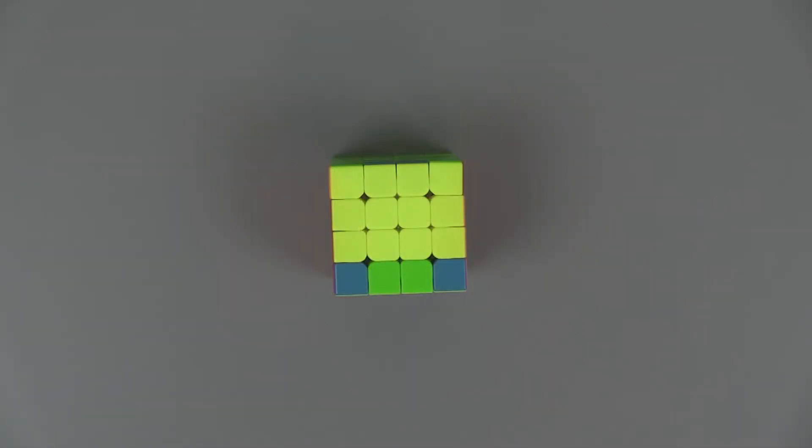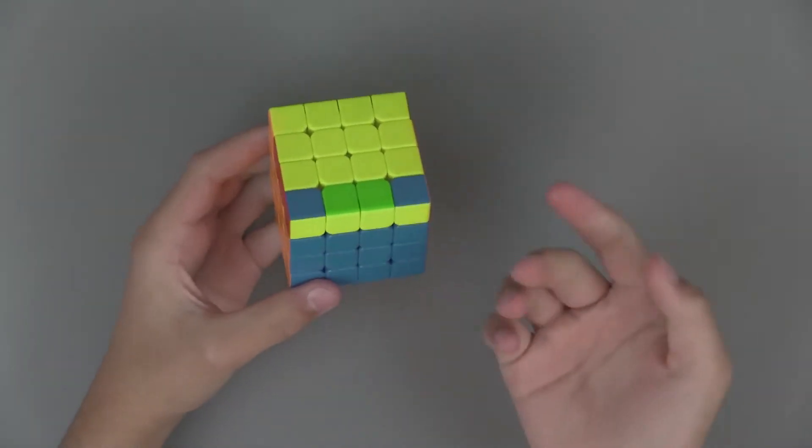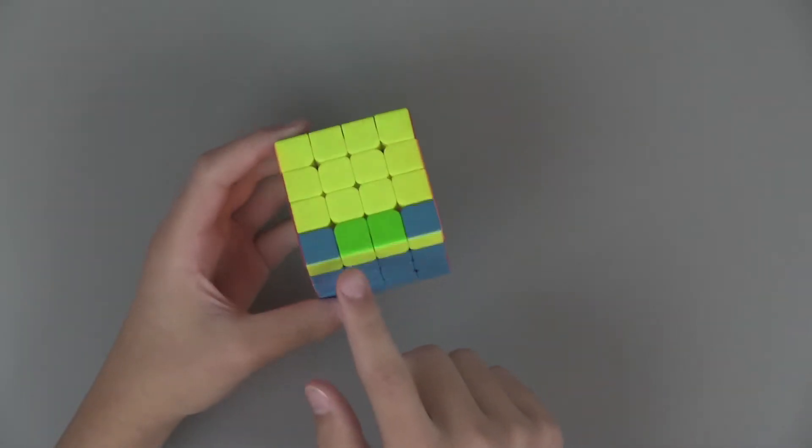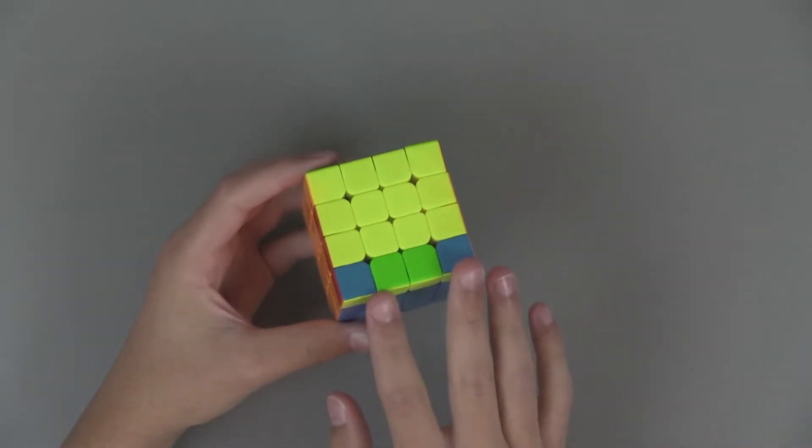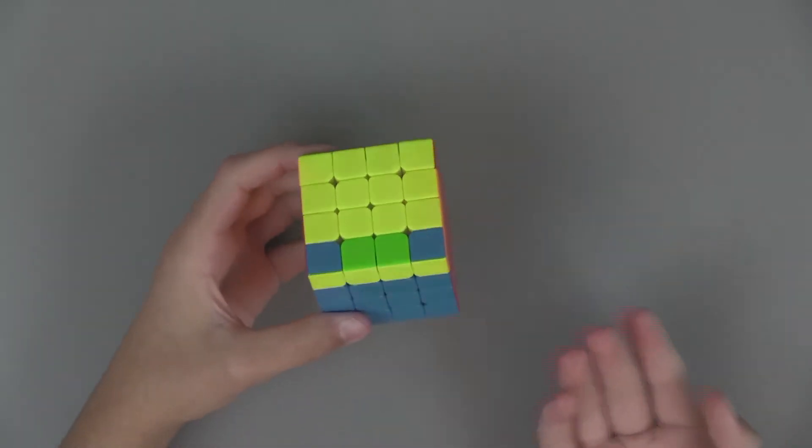Starting off with 4x4, there is really no edge parity on it, it's not possible for you to get, but there is OLL and PLL parity. I have set this case up to where if I do OLL parity and then PLL parity the cube will be solved.